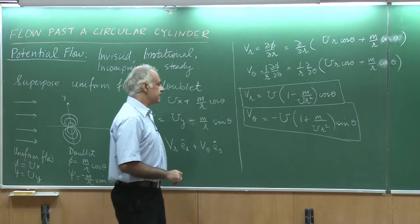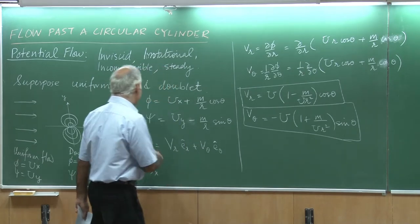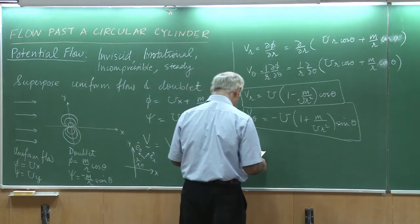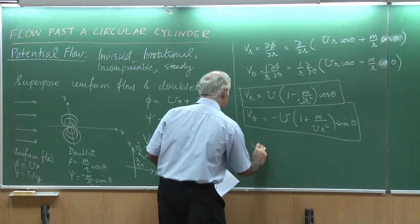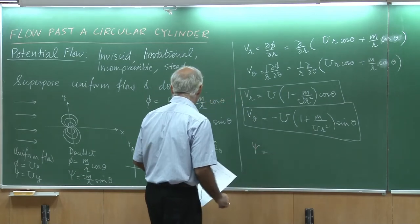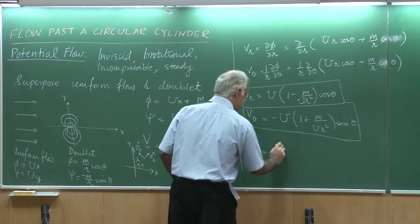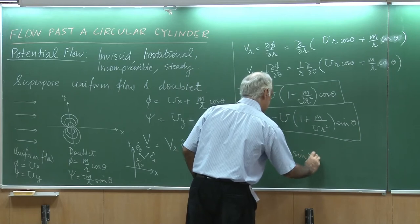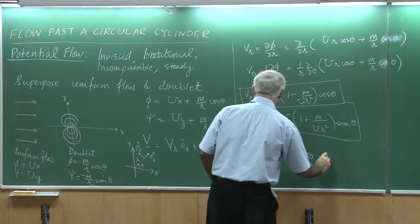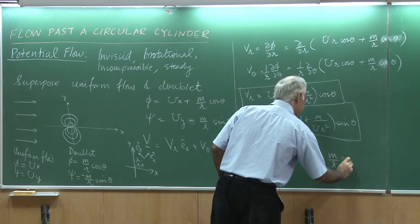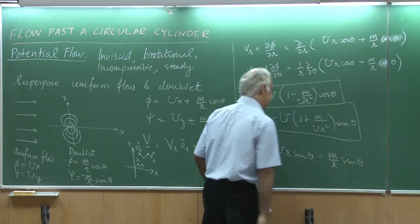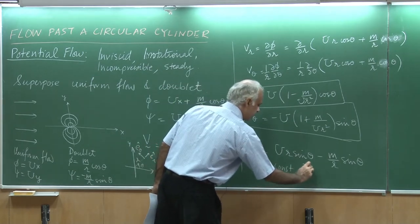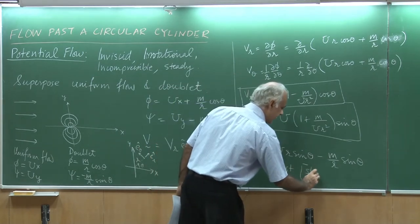How about the stream function? That would help me draw the streamlines. The stream function here would essentially be u times r sine theta minus m divided by r times sine theta. Setting this equal to a constant leads to streamlines. I will be using this.